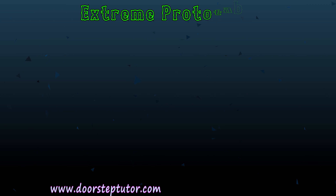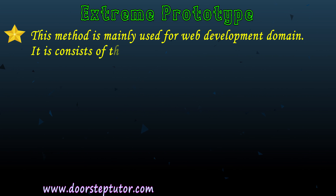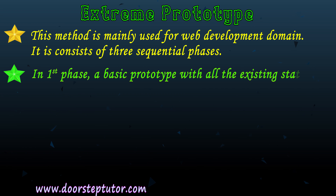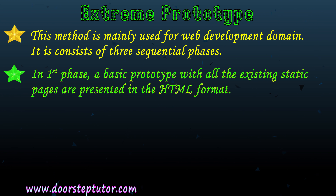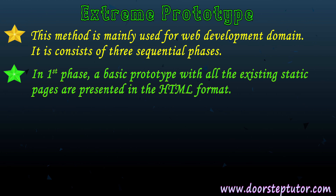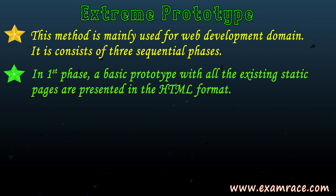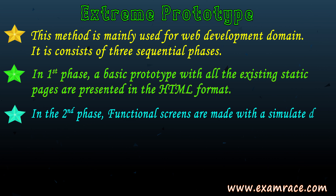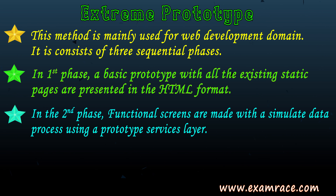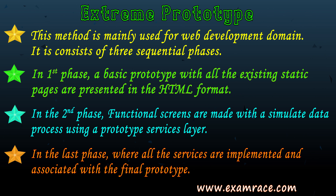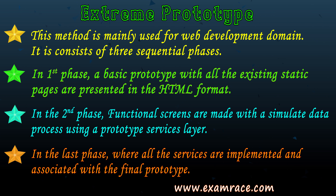The last type is extreme prototype. It has different phases: the first phase involves static pages coded in HTML — Hypertext Markup Language, which is used for web development and front-end representation in tag form. The second phase involves functional screens where data is processed. In the last phase, all services are implemented and associated, and finally we get the final prototype. It is mainly used for web development.